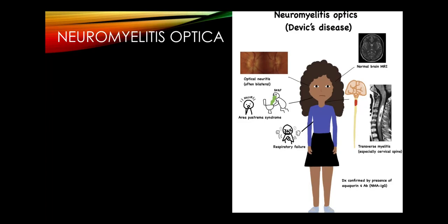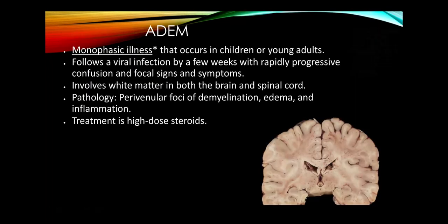Neuromyelitis optica has a similar presentation to MS but is almost exclusively younger women. Optic neuritis is frequently bilateral, and there is a very extensive cervical cord lesion — patients can have severe quadriparesis or even respiratory failure. The area postrema is often involved, causing intractable nausea and vomiting. Diagnosis is confirmed by aquaporin-4 antibodies. Brain is relatively preserved, unlike in MS.